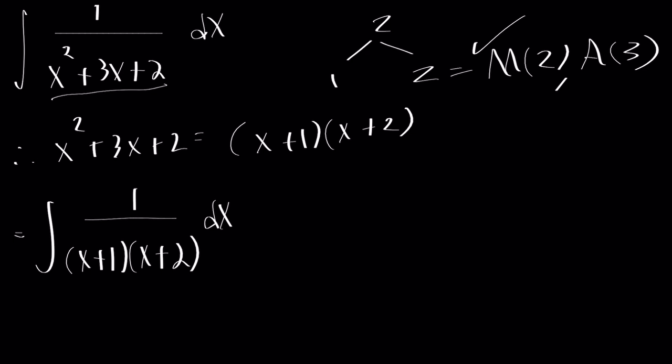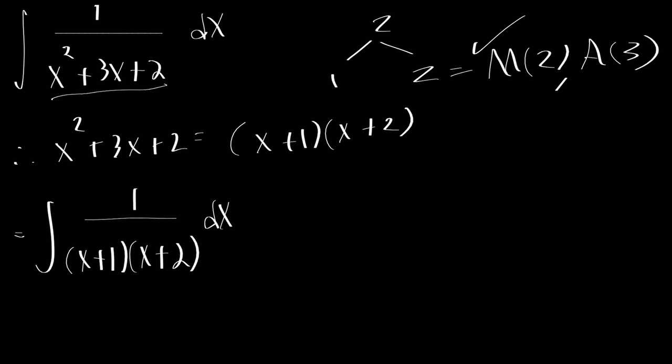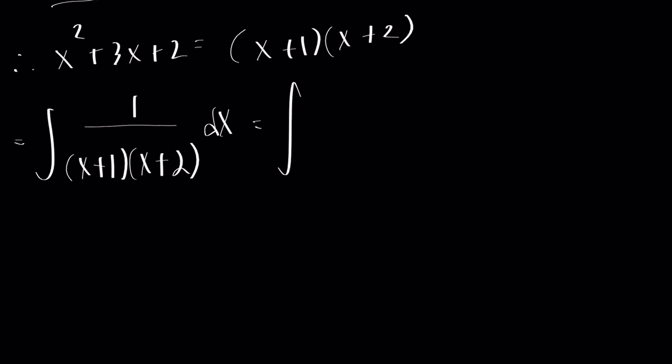And then we could incorporate a technique called partial fractions. So this is equal to the integral of a over x plus 1 plus b over x plus 2, where a and b are some constants. And we have to find the value of a and b.